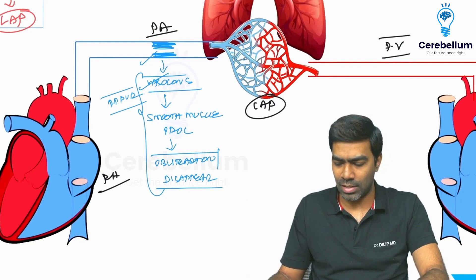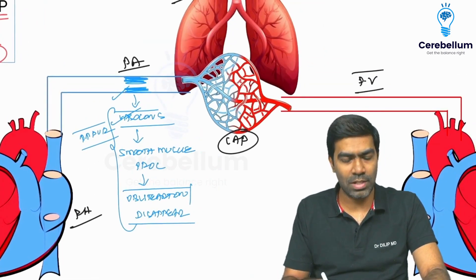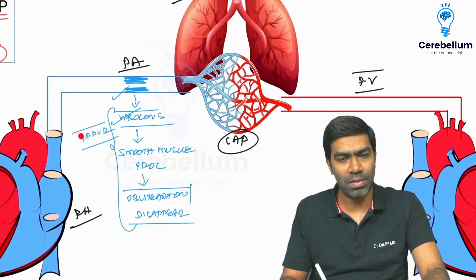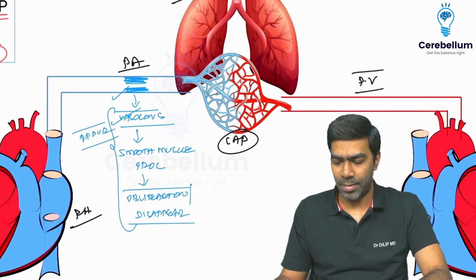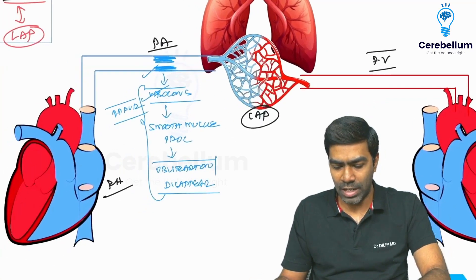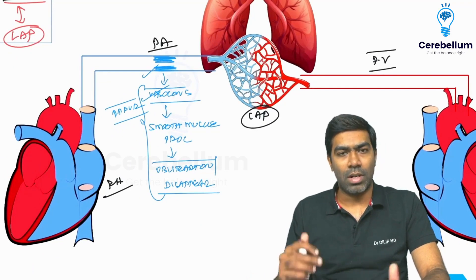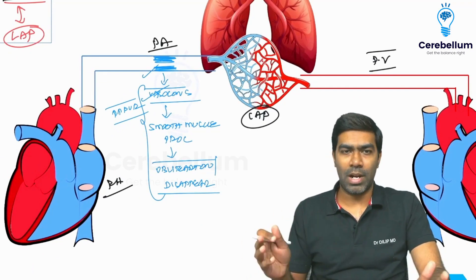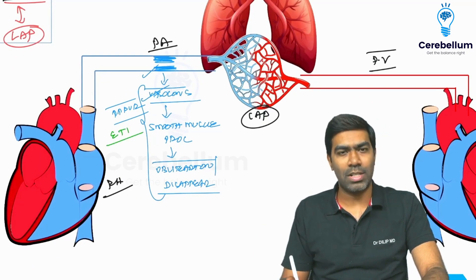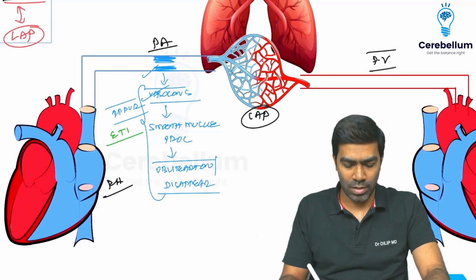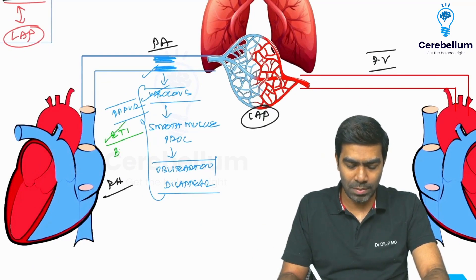The resistance offered by the pulmonary vascular bed in patients with type 1 pulmonary artery hypertension will be very high because of this sequence of changes. There are plenty of mediators involved, but two are very important: endothelin-1, which is important for therapy, and BMPR.